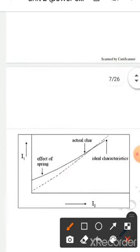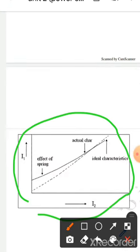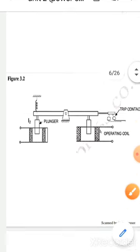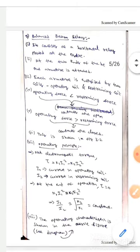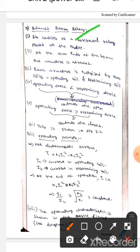This is the operating characteristics diagram. This is all about the balanced beam relay. I hope you understand guys, thank you.